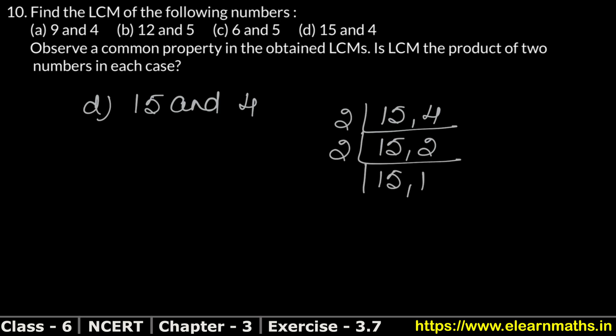Again 2, it will divide by 2 only. 15 as it is remains. 2, 1 goes into 2. Now 15 comes in 3's table. 3, 5 goes into 15. And 5, 1 goes into 5. So what is our LCM? 2 times 2.